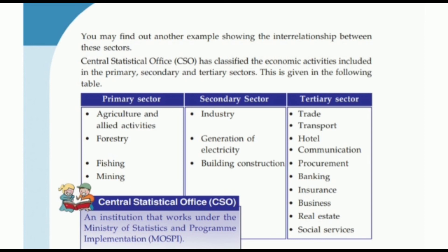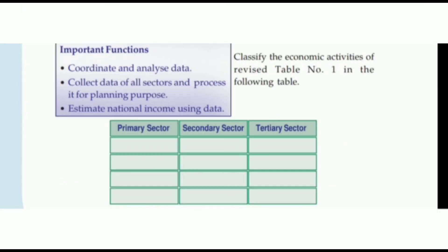You have an activity here: classify the economic activities from Table Number 1 in the following table. In the first page of the chapter, we have Table Number 1. You have to classify those jobs into primary, secondary, and tertiary sectors. Write this in the table mentioned in your textbook.